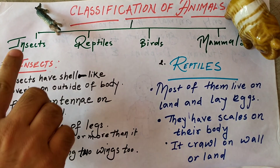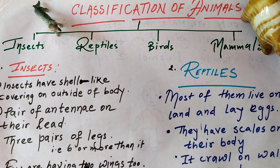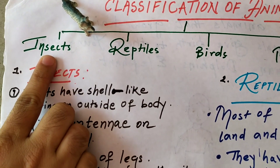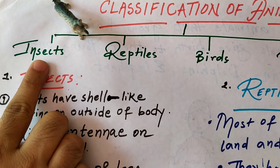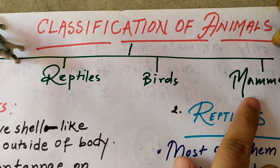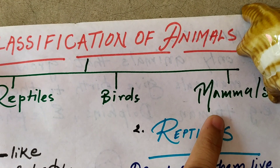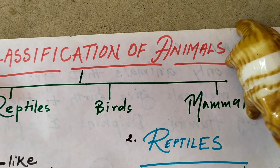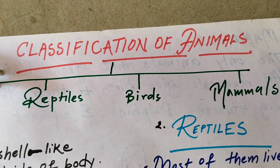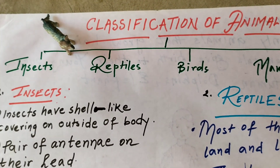There are four categories for you. First of all, insects — everybody repeat with me — insects, then reptiles, then birds, then mammals. Understood everyone? Please note them down as well.